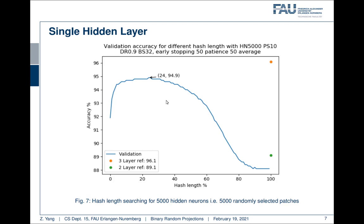It's almost as good as a three-layer reference and significantly better than a two-layer reference. Which means even if we randomly select patches, randomly drop pixels, and no parameters are learned between the input layer and the hidden layer, we still can achieve almost the same accuracy as the three-layer reference where all the parameters are trained.